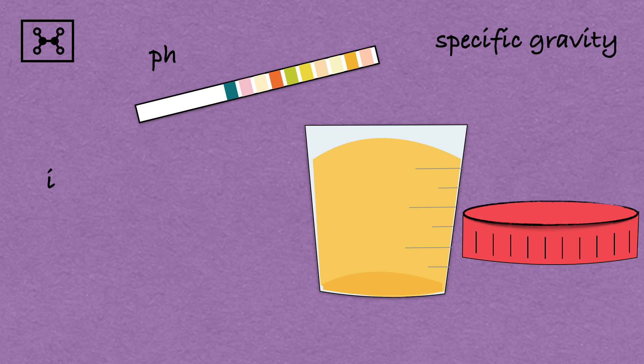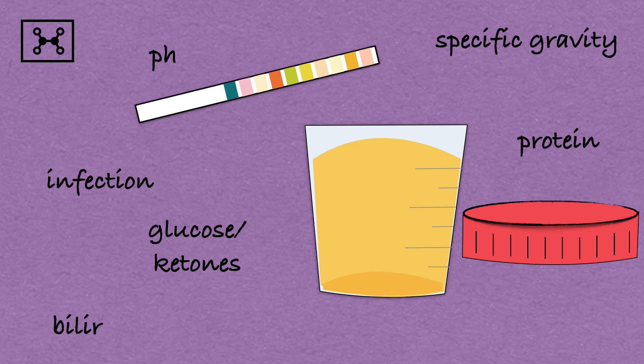A dipstick test checks for pH and specific gravity, evidence of urinary tract infection either nitrites or leukocyte esterase, protein which might indicate a kidney problem, glucose and ketones could be a sign of diabetes and require follow-up testing, bilirubin is an indicator of liver disease, and blood can be a sign of several diseases and requires additional testing.